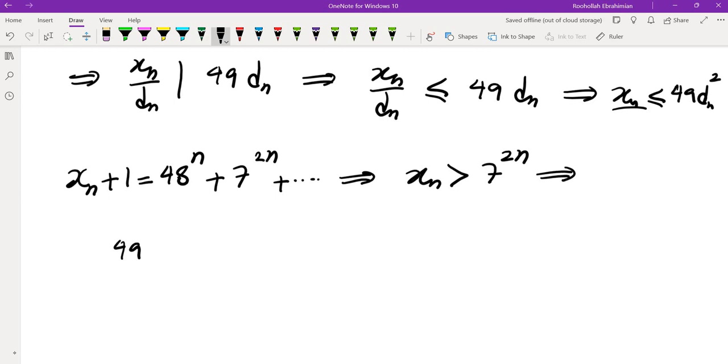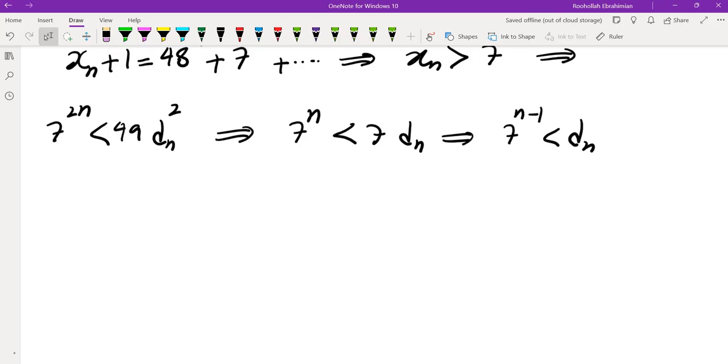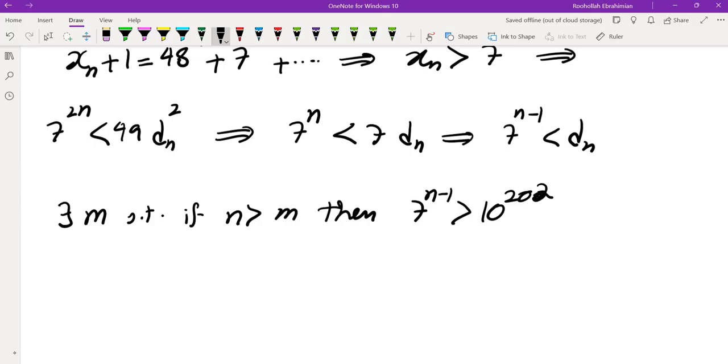We can replace xn with that bound. We get 49 dn squared is more than 7 to the power of 2n. Taking square roots, we get 7 to the power of n is less than 7dn, which means dn is more than 7 to the power of n minus 1. Of course we can make dn large, because 7 to the power of n minus 1 approaches infinity. So there is some m such that if n is more than m, then 7 to the power of n minus 1 is more than 10 to the power of 2024, which means dn is also more than 10 to the power of 2024.